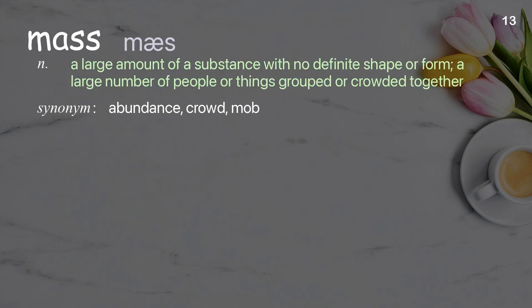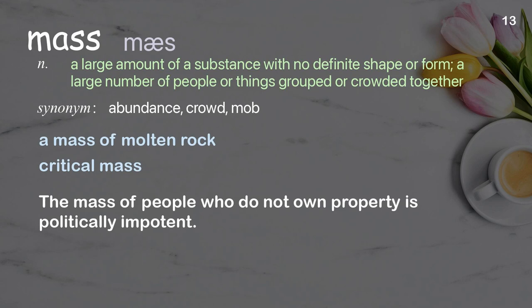Mass: a large amount of a substance with no definite shape or form; a large number of people or things grouped or crowded together. Examples: a mass of molten rock, critical mass. The mass of people who do not own property is politically impotent.